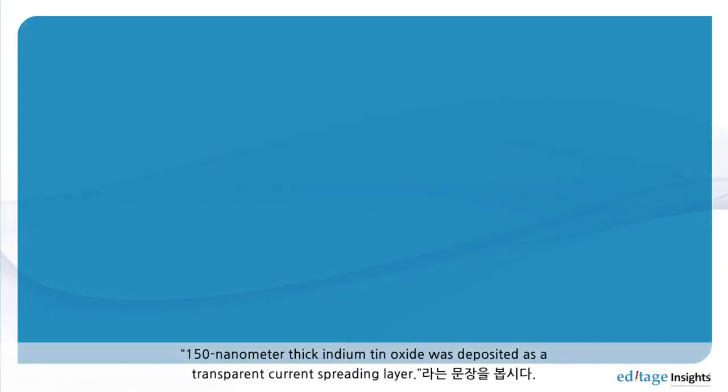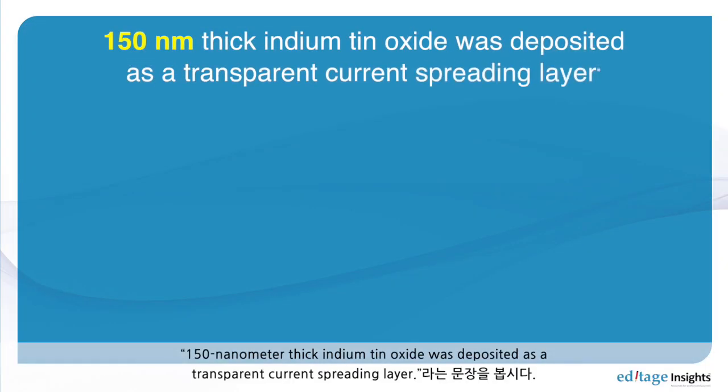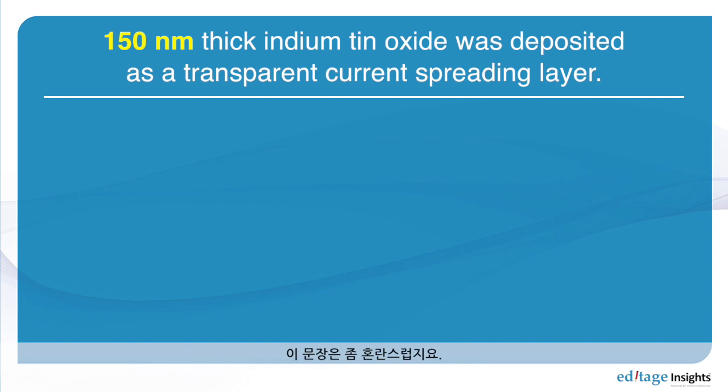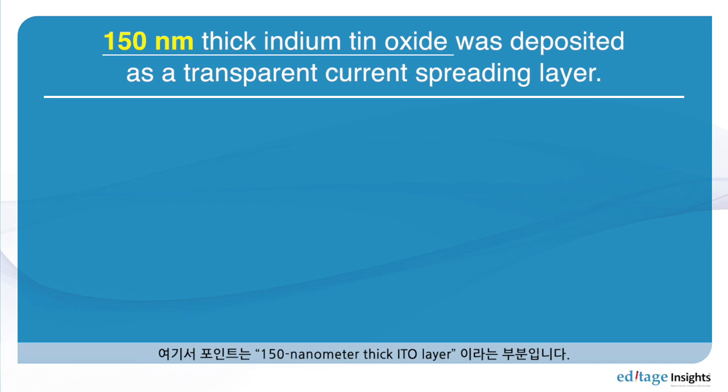As an example: '150 nanometer thick indium tin oxide was deposited as a transparent current spreading layer.' This sentence is a little bit confusing. The point is the 150 nanometer thick ITO layer.